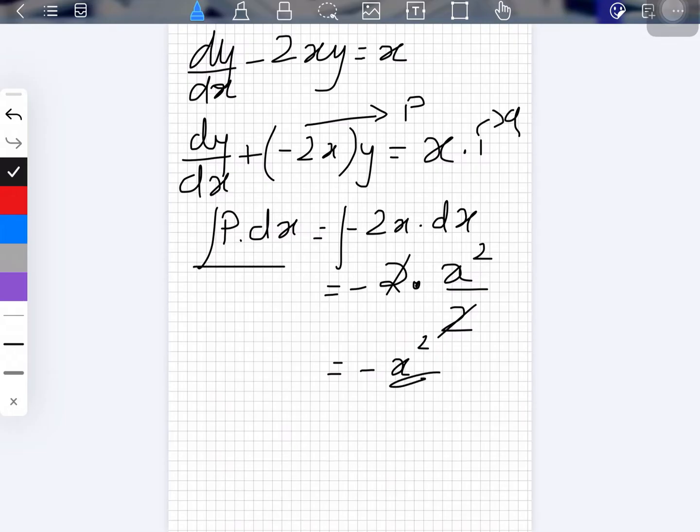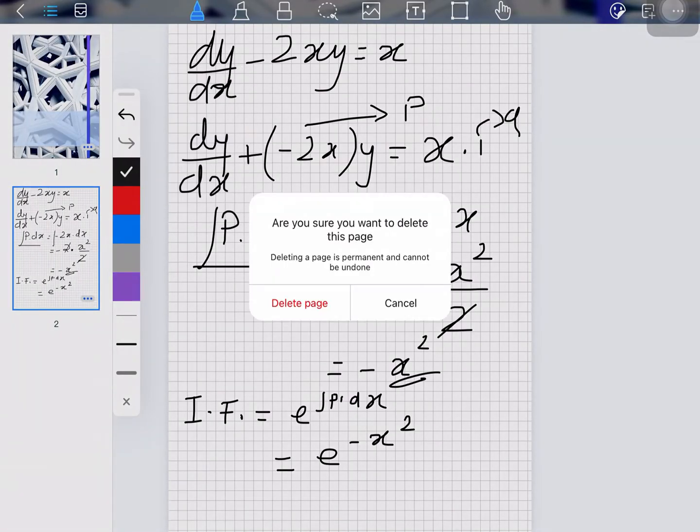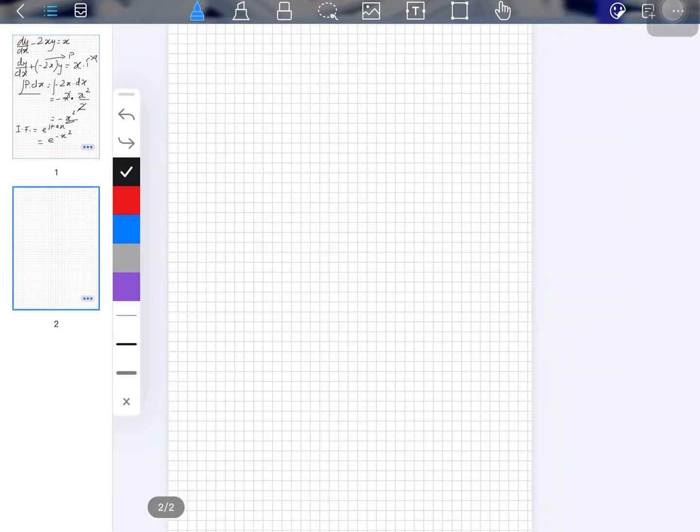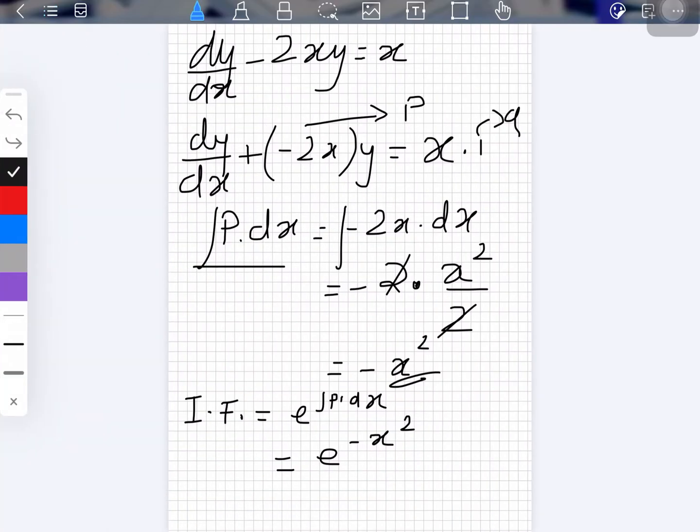So the integrating factor that we can write as IF is e^(∫p dx), which of course is with respect to x. So it equals e^(-x²). We can remove this cover page and then let's add a few more pages. Sorry for the delay, but let's move to the next page.